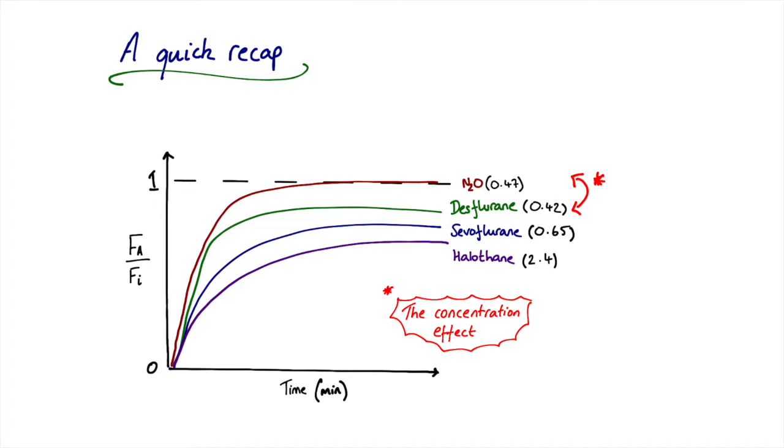By way of a quick recap, we saw in the last video on blood gas partition coefficients that the general trend was one of reducing number for the blood gas partition coefficient corresponding to more rapid onsets of action, more rapid achievement of equilibrium.